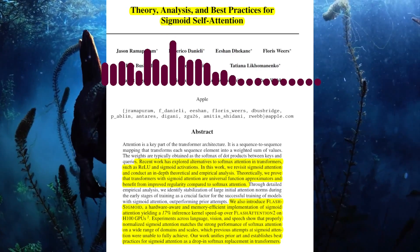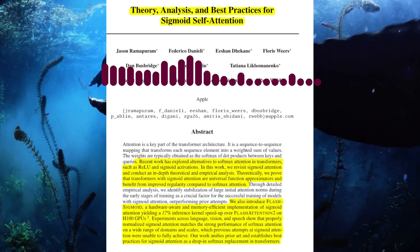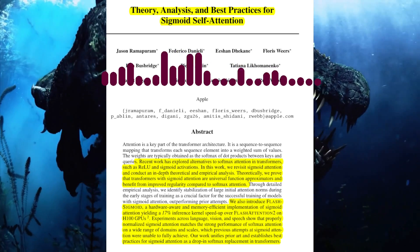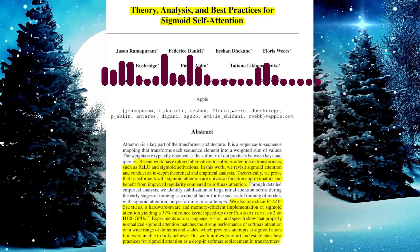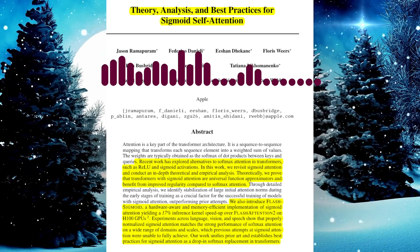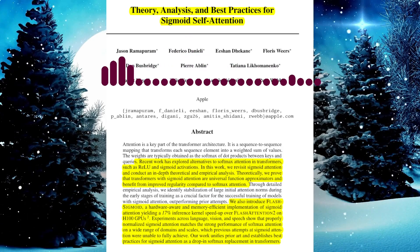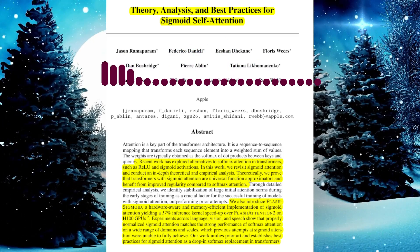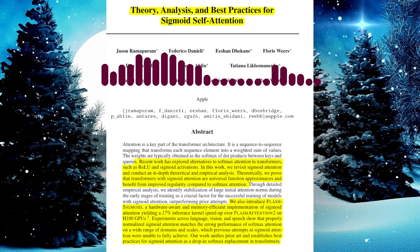Can you elaborate on the specific challenges and solutions for different domains? The paper finds that different domains have different sensitivities to these factors. In language modeling, sigmoid attention is more sensitive to the initial attention norm and requires careful initialization of the bias term — using ALiBi or setting the bias term to a negative log helps to stabilize training. In vision tasks, on the other hand, sigmoid attention is more robust and can often achieve good performance without the need for QK norm or even layer scale.